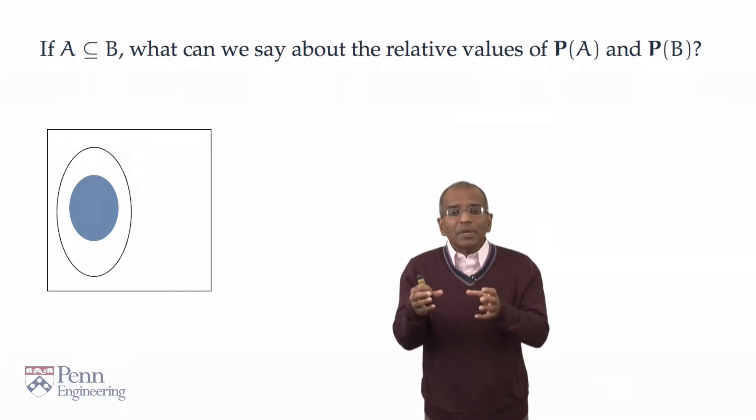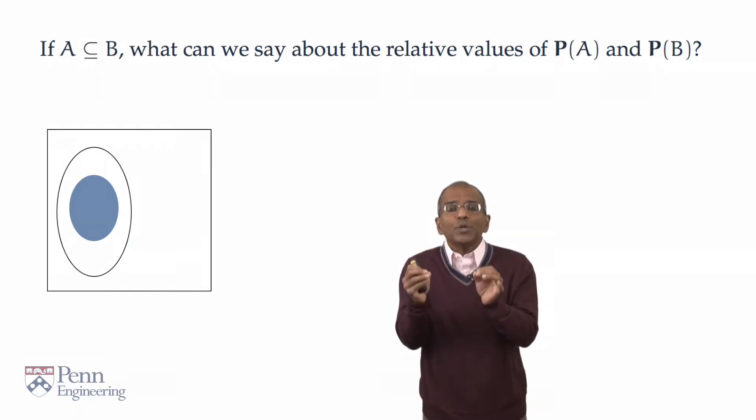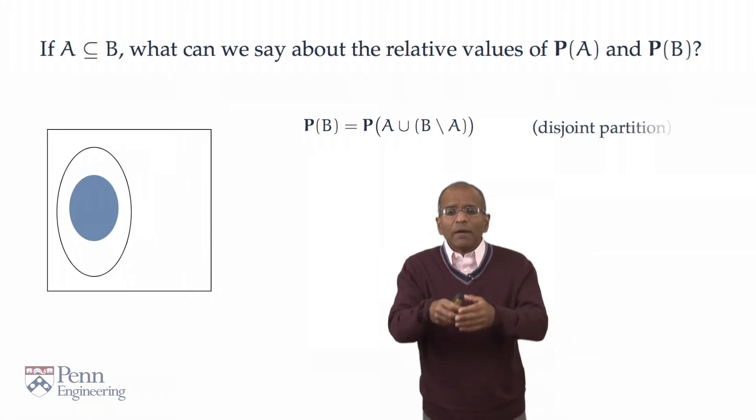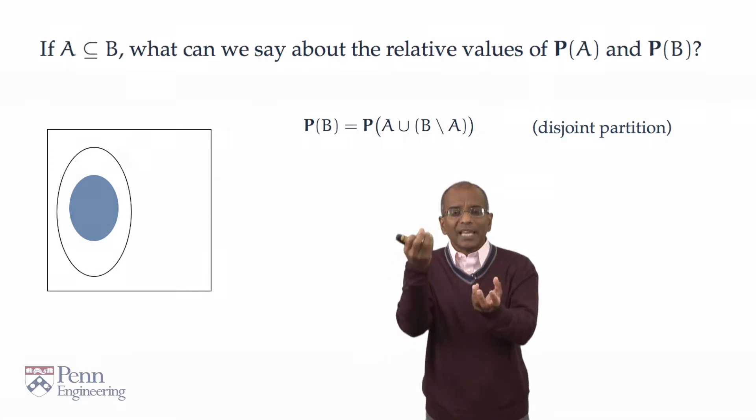In other words, any element of B is of one of two distinct types. It must belong to A or it must belong to B minus A. And so we have an identity. We have decomposed B into the union of two disjoint pieces, A and B minus A.